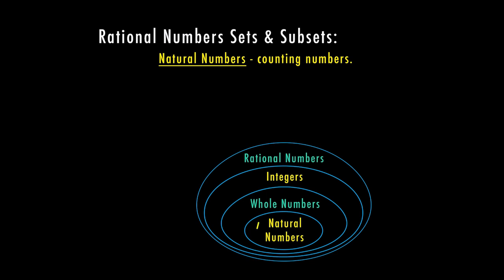So one is going to be our first counting number, two, three, four, five, six hundred and twenty, and so on. So any number you would say while you're counting anything would be considered a natural number.